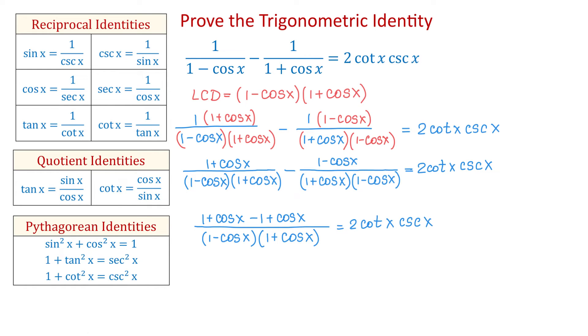Now on the left side, 1 and negative 1 will cancel, and cosine of x plus cosine of x is 2 cosine of x.